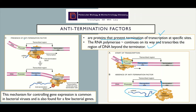When we have anti-termination factors, the RNA polymerase will be attached to an anti-termination factor. Even after arriving at the termination site, the RNA polymerase will still continue to transcribe past the termination site. This mechanism for controlling gene expression is common in bacterial viruses and is also found in a few bacterial genes.